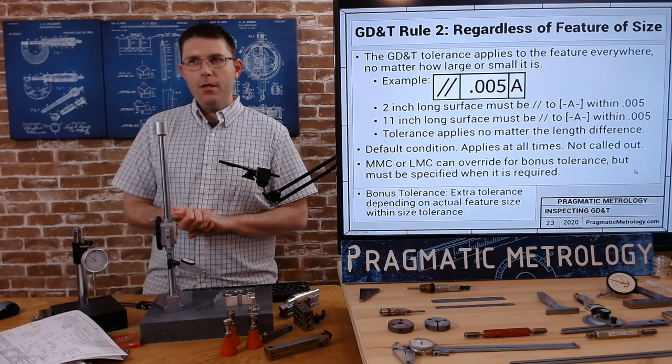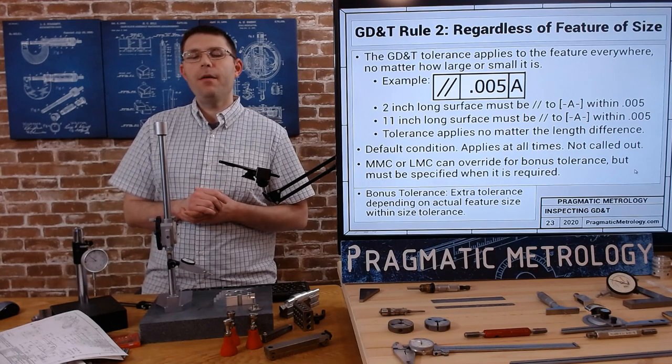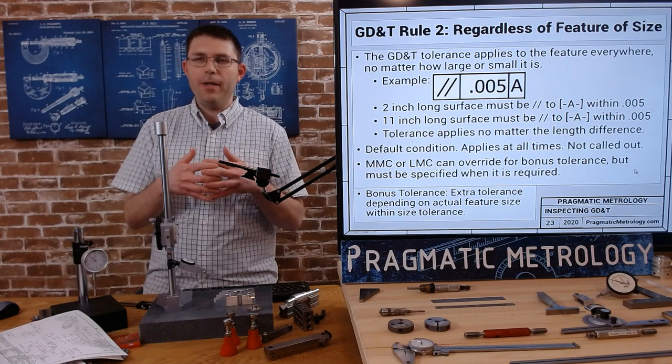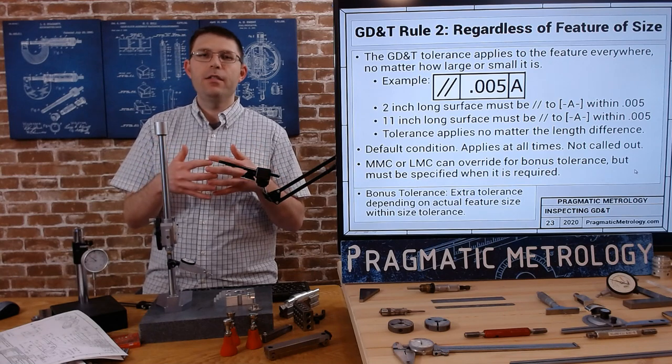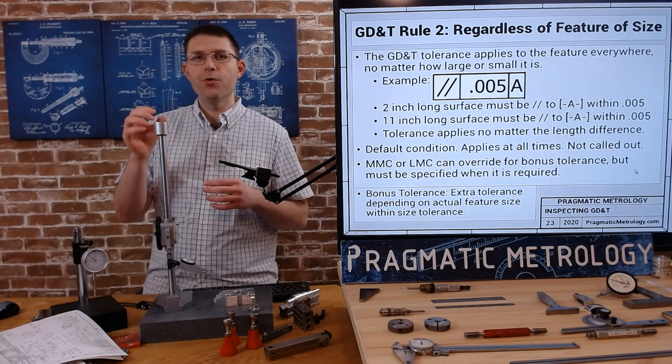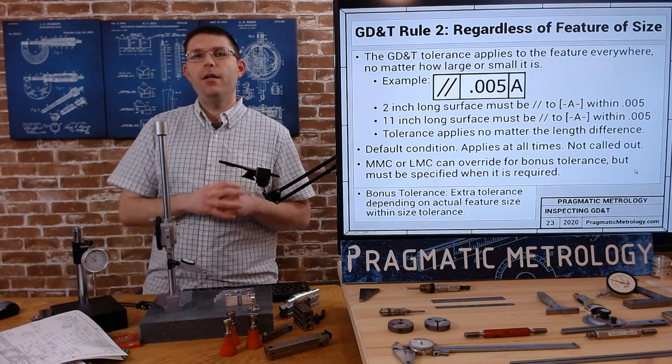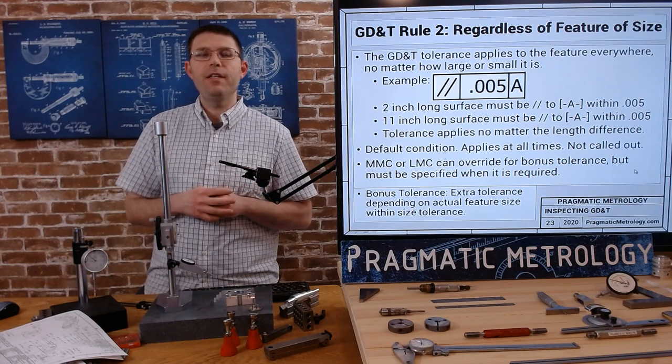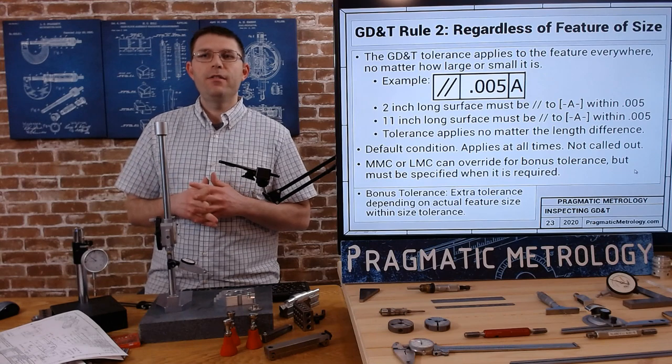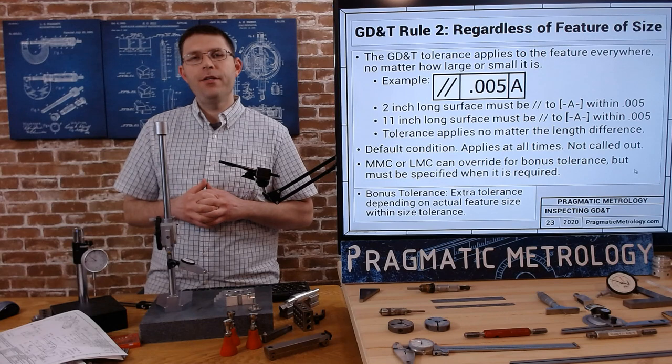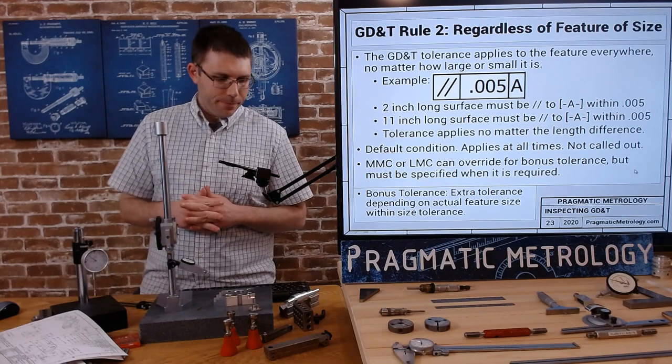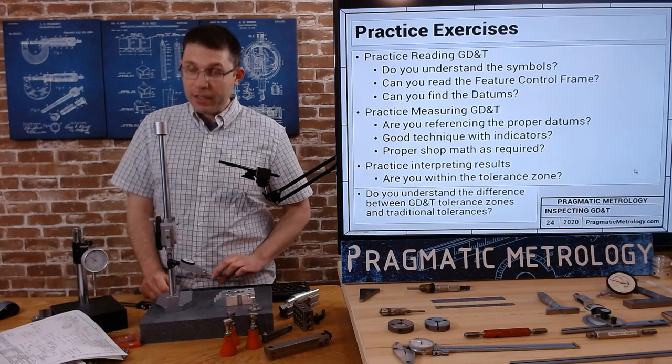Now there is a rule three that we're not really going to talk about in this video. It has to do with threads. Rule three says when you're designing threads or inspecting threads, basically everything is dependent on the pitch diameter and it defines the pitch diameter there, which we said is when the peak and the valley thickness is the same. That's the pitch diameter, roughly 50% of the way from the root to the crest. That's all it really says - do all of your designs and tolerancing off of the pitch diameter. We talked about that a lot in the thread inspection videos.